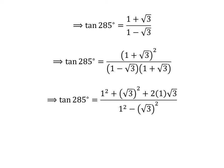Let us expand the square of 1 plus square root of 3. In the numerator we have square of 1 plus square of square root of 3 plus 2 times 1 times square root of 3. In the denominator, 1 minus square root of 3 times 1 plus square root of 3 is equal to square of 1 minus square of square root of 3. Square of 1 is 1 and square of square root of 3 is 3. So, tangent of 285 degrees is equal to 1 plus 3 plus 2 times square root of 3 upon 1 minus 3.